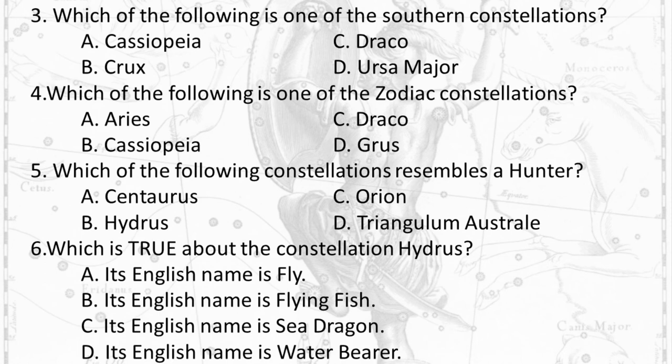Question 4: Which of the following is one of the Zodiac constellations? A. Aries B. Cassiopeia C. Draco. Question 5: Which of the following constellations resembles a Hunter? Question 6: Which is true about the constellation Hydrus? A. Its English name is Fly. B. Its English name is Flying Fish. C. Its English name is Sea Dragon. D. Its English name is Water Bearer.